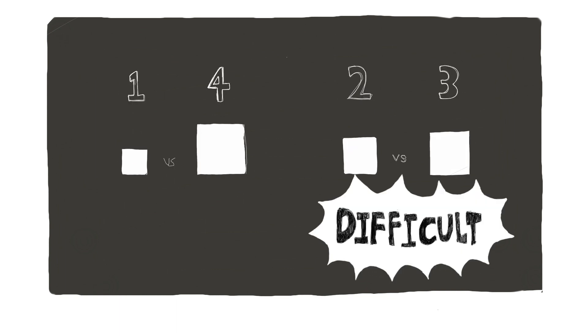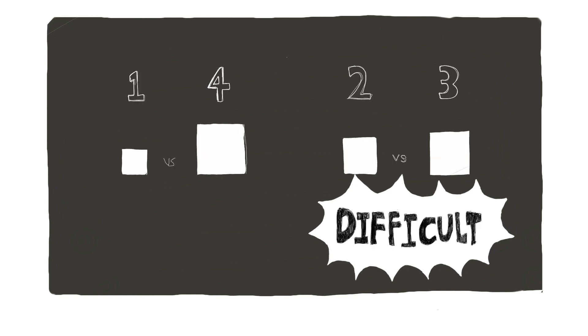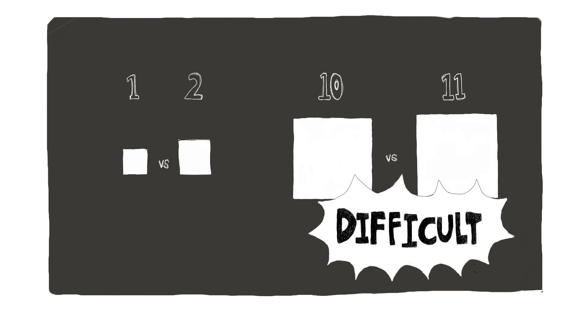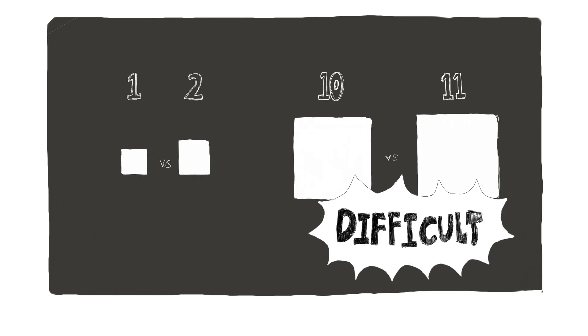Even when the difference between two different sets of squares is the same, for example, a set of squares size 1 and 2 and another set size 10 and 11, the latter is more difficult to determine because the relative difference is smaller.